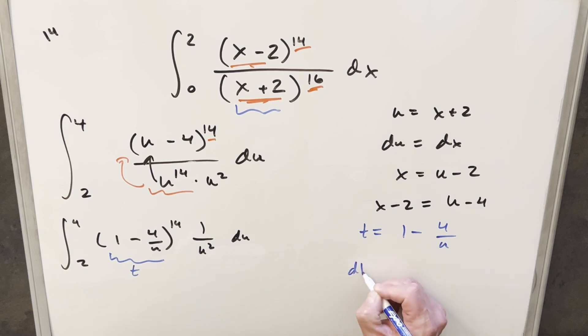Then we'll take a derivative. So for dt, derivative of 1 is 0, derivative here is going to actually be 4 over u squared du.